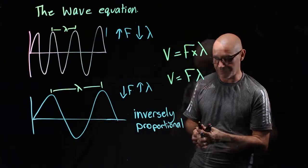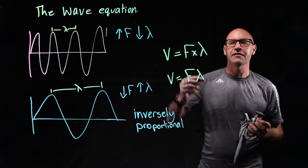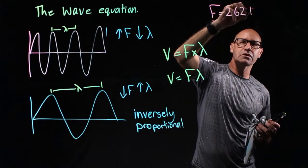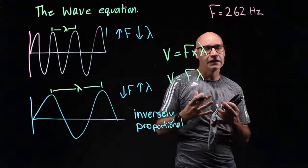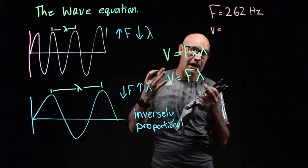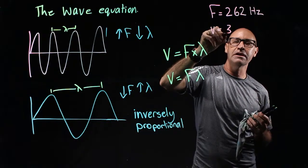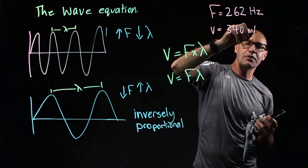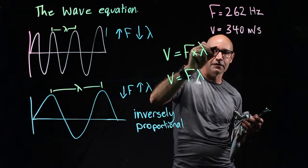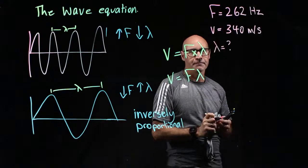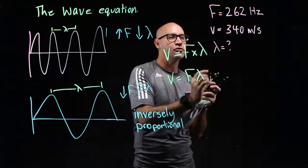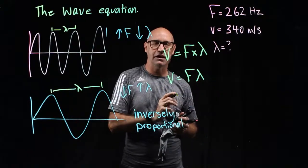So let's do an example. We have a music note that has a frequency of 262 hertz. And this particular wave, this sound, is travelling through air at a speed of 340 metres per second. So we need to find out wavelength. Wavelength is our unknown. Now, I'm going to show you how we can work out how to manipulate the wave equation such that wavelength is by itself.